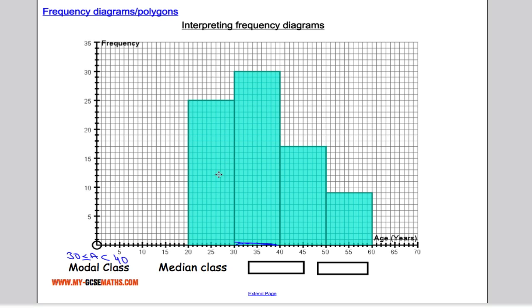I could also be asked what the median class is. In order to get the median I need to work out how many pieces of data there are in total. So I'm going to add the frequency of all the bars together. This one is 25, this one is 30, this one is 18, and this one is 9. Adding these together: 25 and 30 is 55, 65, 73, 82. So we've got 82 in total which means the middle value is going to be at 41.